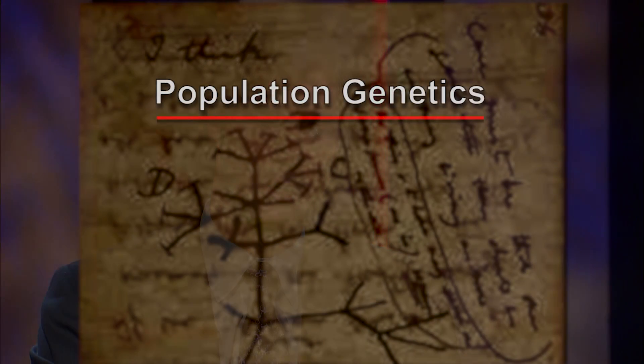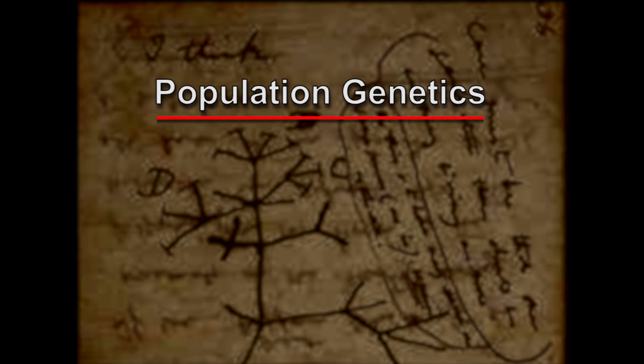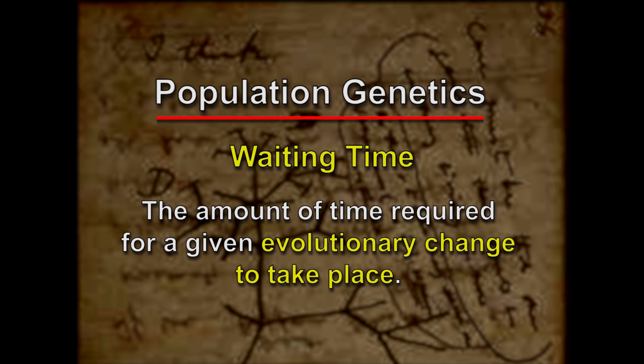There's a branch of evolutionary theory known as population genetics — a very mathematical branch of biology in which biologists are able to calculate what they call waiting times. This is the amount of time you would expect for a given evolutionary change to take place. Biologists can make these calculations if they know something about the mutation rate, the generation time, and the size of the populations involved. Recent calculations in population genetics are showing that if you need more than a few coordinated mutations, the waiting times blow up beyond hundreds of millions of years.